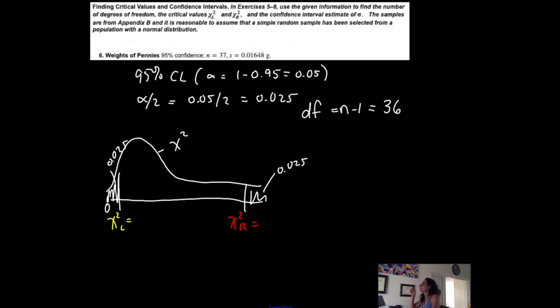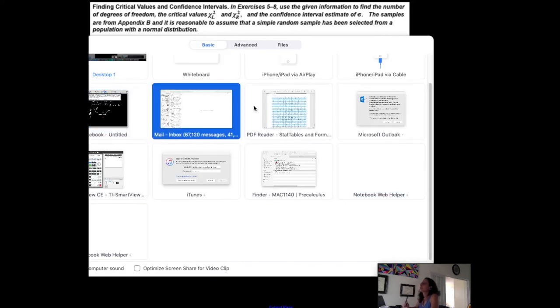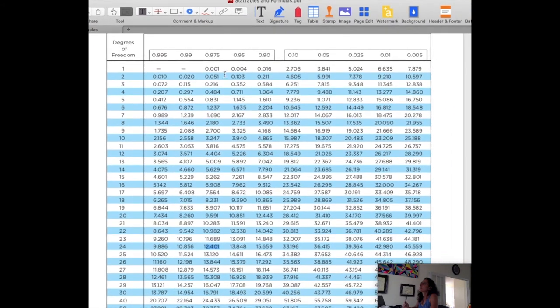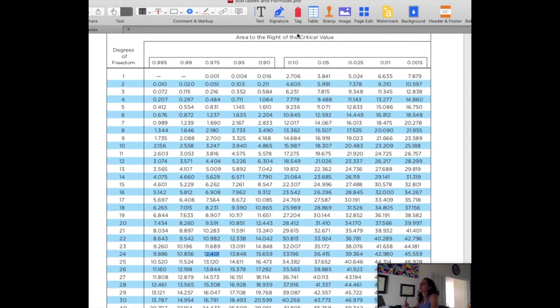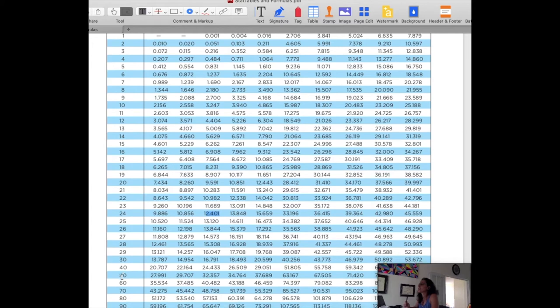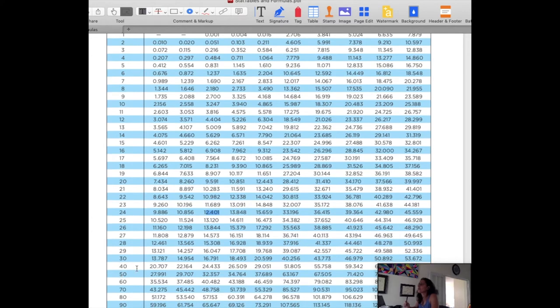So now I'm going to go to the table. I like to do my right-tailed first because it's easiest. I already know the area to the right is 0.025. I said the area to the right of the critical value that I want is 0.025. I said I have degrees of freedom of 36. Now my table is limited. It doesn't have 36 degrees of freedom. So I have to round to the closest, and the closest is 40 on this table.